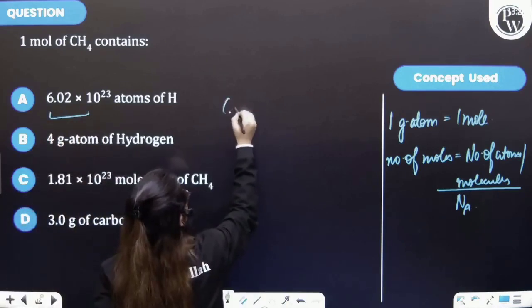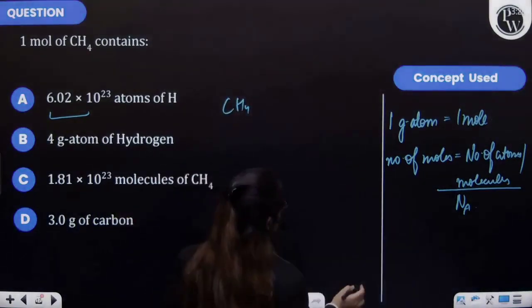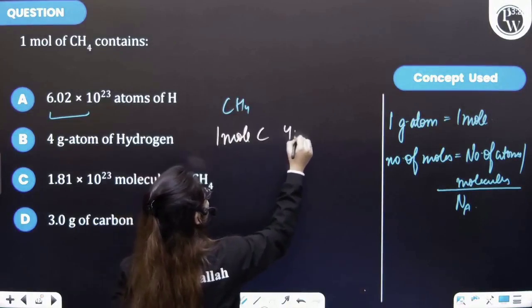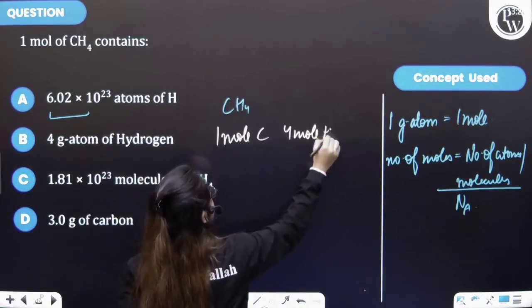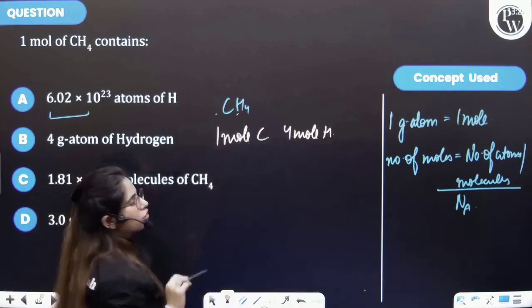Firstly, we are having CH4 and so this means that one mole carbon and four moles of hydrogen is there. This is about the stoichiometry - we are having one mole carbon and four moles of hydrogen.